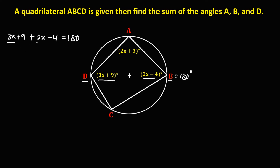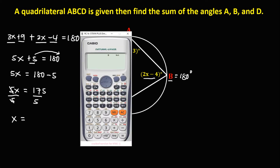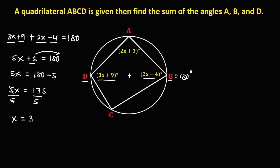So we have 3x plus 2x, which is 5x, then positive 9 minus 4, that's positive 5, equals 180. So 5x equals 180 — we transpose the positive 5, so it becomes negative 5. 5x equals 175, then divide by 5 to solve for x. So 175 divided by 5 — x is equal to 35.